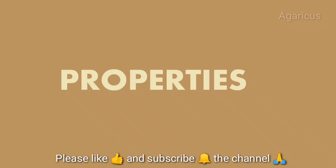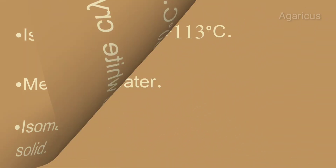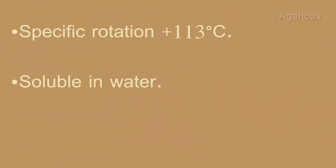Next we can discuss the properties of isomaltose. Isomaltose is a reducing sugar with a melting point between 98 to 160 degrees Celsius. It is a white crystalline solid. The specific rotation of isomaltose is 113 degrees. It is soluble in water.